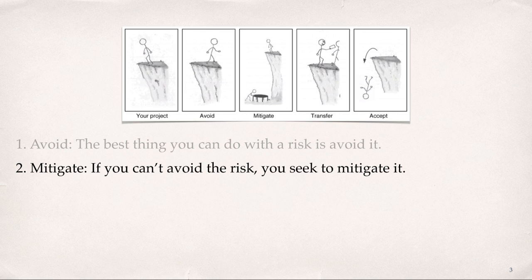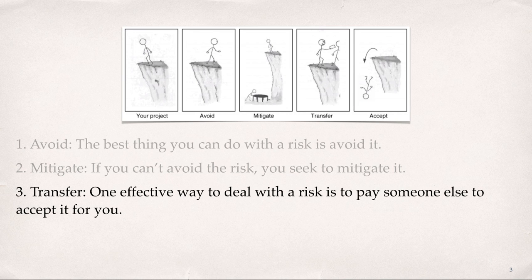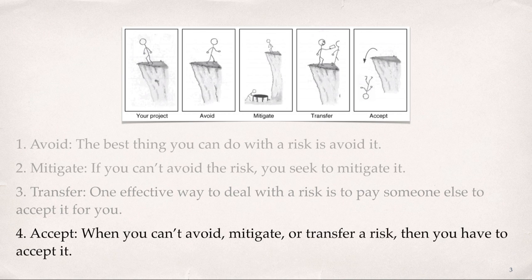The second is to mitigate. If you can't avoid the risk, you seek to mitigate it. This means taking some sort of action that will cause it to do as little damage to your project as possible. Third is to transfer the risk. An effective way to deal with a risk is to pay someone else to accept it for you, and the most common way to do this is to buy insurance. And finally, is to accept it. When you can't avoid, mitigate, or transfer a risk, then you have to accept it. But even when you accept a risk, at least you've looked at the alternatives, and you know what will happen if it occurs. If you can't avoid the risk and there's nothing you can do to reduce its impact, then sometimes accepting it may be your only choice.